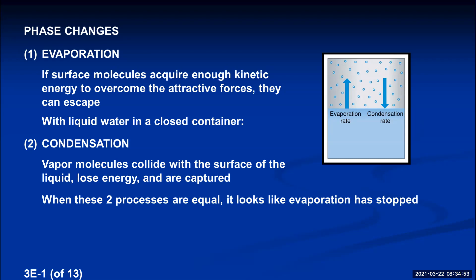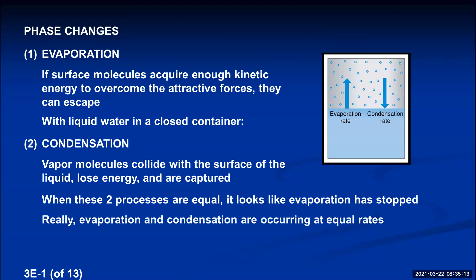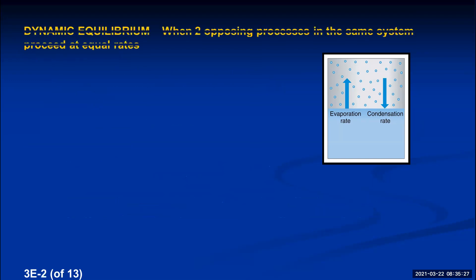When these two processes are equal, it actually looks like evaporation has stopped. You might microscopically notice the liquid level going down at first, but once the rates are equal, the level appears constant — you might conclude evaporation and condensation have stopped, but that's not true. What's happened is both processes are occurring at equal rates. When two opposing processes in a system proceed at equal rates, that's called dynamic equilibrium. In a closed container with liquid water, evaporation and condensation reach dynamic equilibrium.